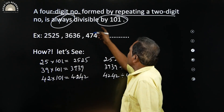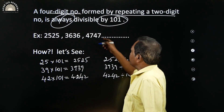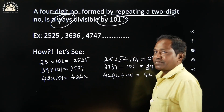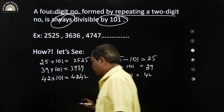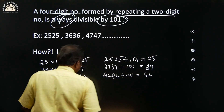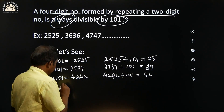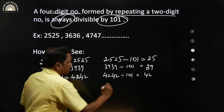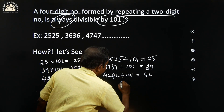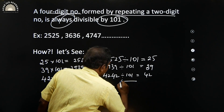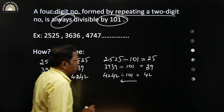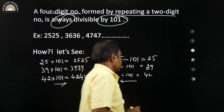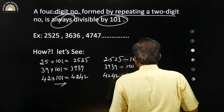So, a 4-digit number formed by repeating a 2-digit number is always divisible by 101. This is the concept — you need to know both the forward order and the backward order. The concept is very simple.